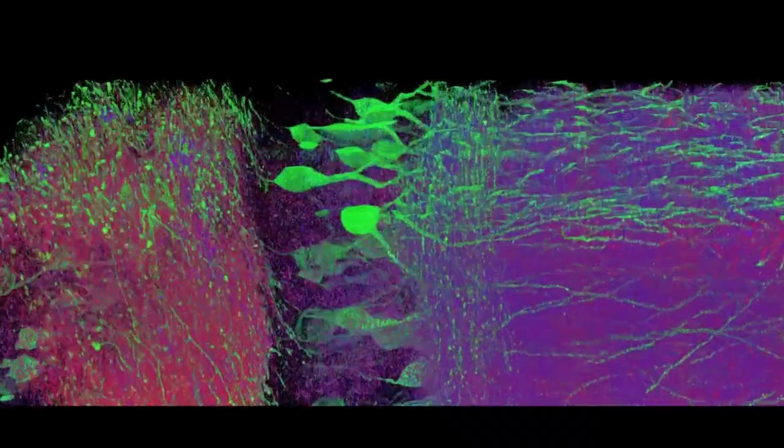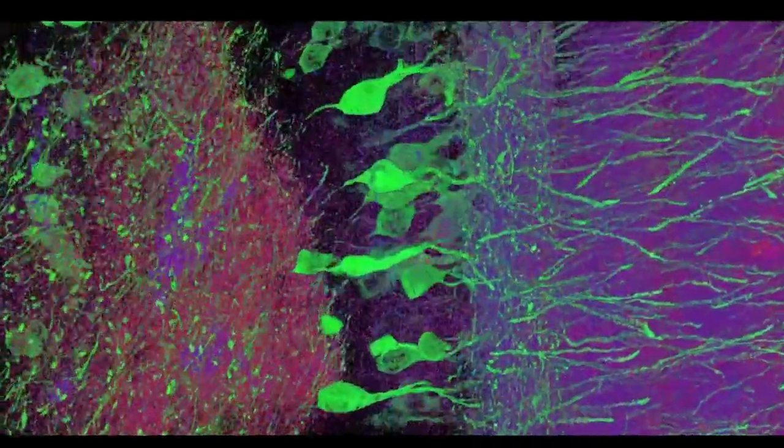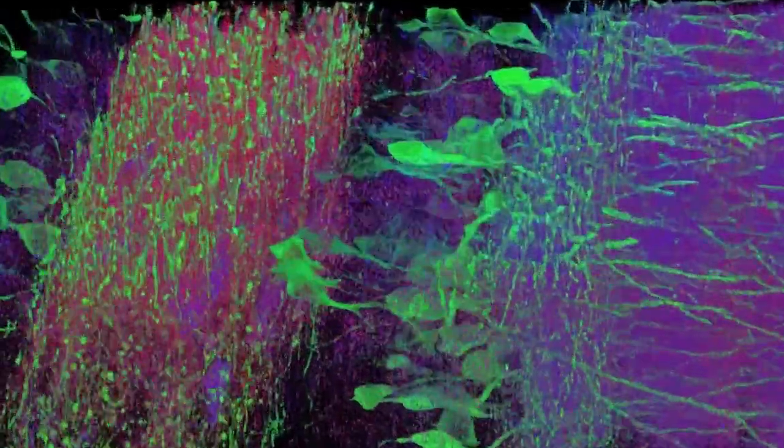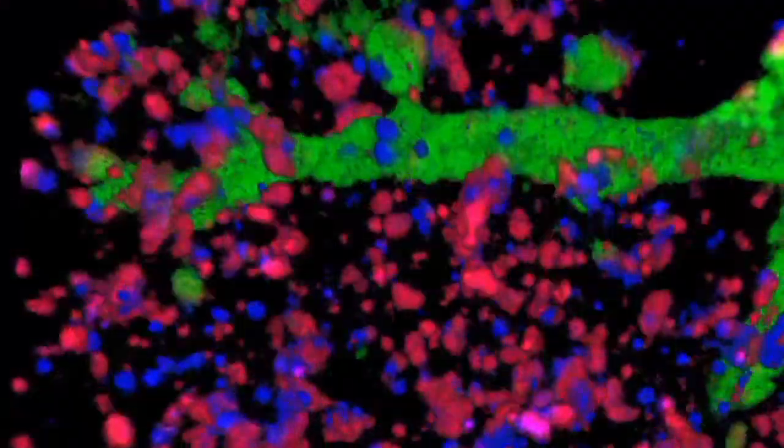With expansion microscopy, we can image whole 3D volumes at a resolution of tens of nanometers. What's cool about this is that you actually can start to try to navigate brain circuits. You can scan large chunks of brain tissue, but with nanoscale precision.